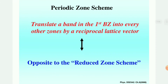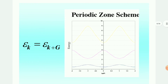The other band structure representation is the periodic zone scheme. The periodic zone scheme translates the band in the first Brillouin zone into every other zone by the reciprocal lattice vector — it is opposite to the reduced zone scheme. All energy bands can be reduced into the first Brillouin zone, and then extended over a wide momentum range. The region from minus one to one is the first Brillouin zone, which can then be extended over the wide momentum range — this is the periodic zone scheme.